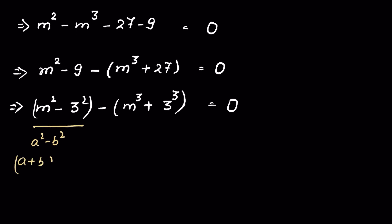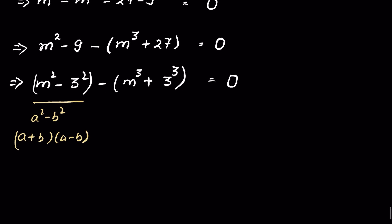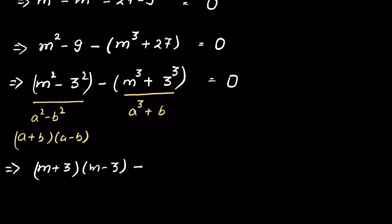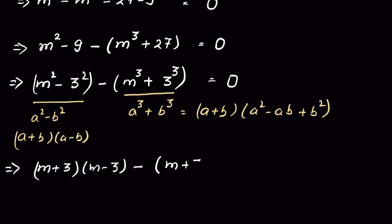The expression m squared minus 3 squared is in the form a squared minus b squared, a difference of squares, so we write it as (m + 3)(m − 3). Then minus (m cubed + 3 cubed) is in the form a cubed plus b cubed, which expands as (a + b)(a squared minus ab plus b squared), giving us (m + 3)(m squared minus 3m plus 9).